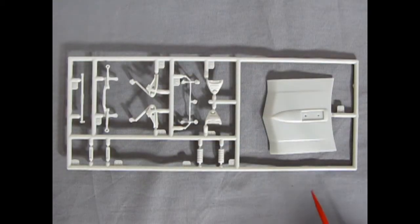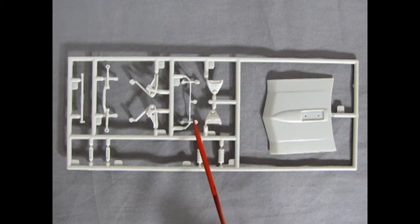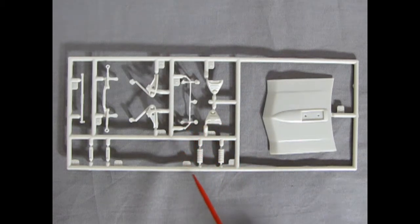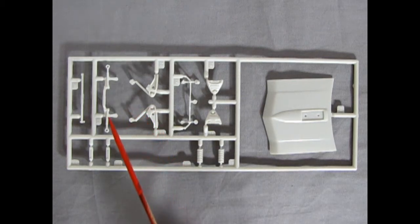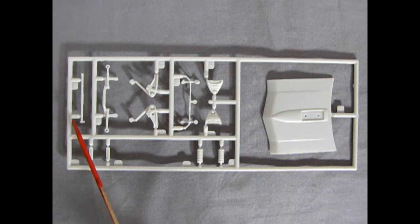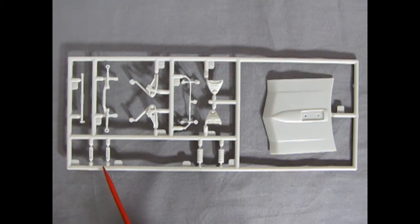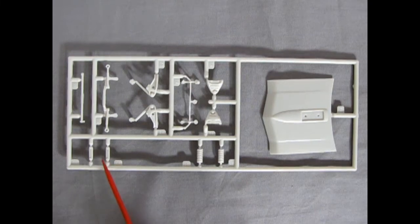For our first parts tree, we have the hood, the upper A arms, the front anti-sway bar, the coil springs, the lower A arms, the steering linkage, the rear anti-sway bar. And here we have the upper control arms for the rear axle.